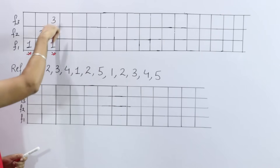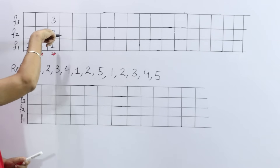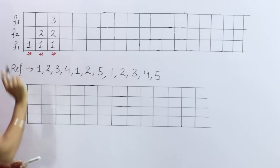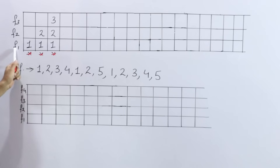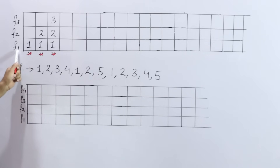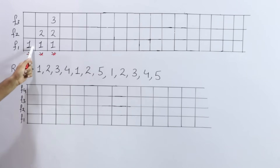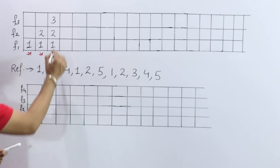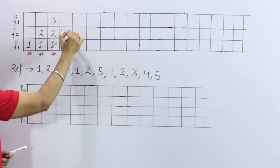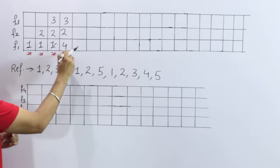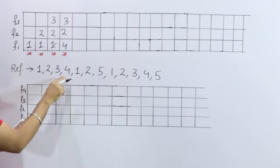Now page number 4 arrives. We check if page number 4 is already present — it is not. Since there is no empty slot, we must replace a frame. In FIFO, we replace the frame that was loaded first, which is frame 1. So we replace page 1 with page 4. This is also a page fault because page 4 was absent.